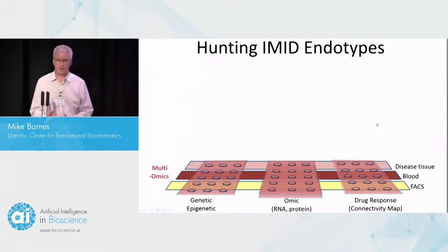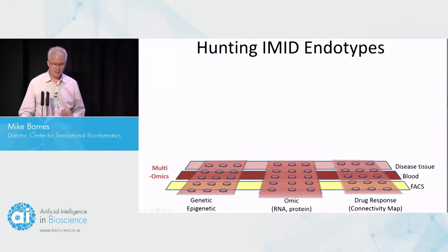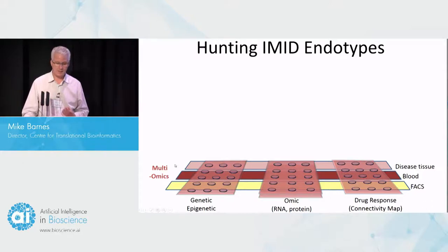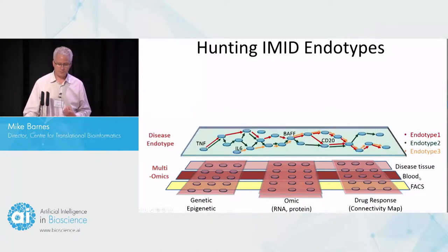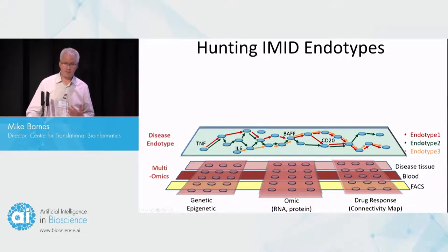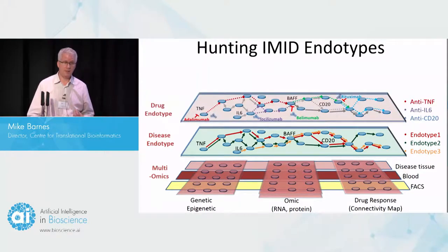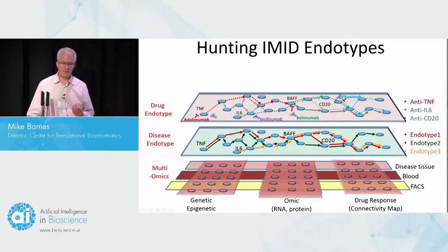What we're doing across a range of stratified medicine projects is multi-omics to generate data to get a good idea of what these underlying endotypes are. We're taking genetic data, omics, RNA, proteomics, and looking at drug response, and from that we're building up the underlying disease endotypes. We're also looking at the drug endotype — what the drug does to the body, the pathways activated by a particular drug. Disease endotype is what the disease does to the body. Where the drug endotype and the disease endotype overlap extensively, you would have a highly efficacious drug.